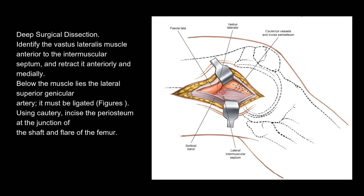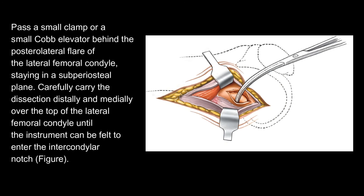Using cautery, incise the periosteum at the junction of the shaft and flare of the femur. Pass a small clamp or a small Cobb elevator behind the posterolateral flare of the lateral femoral condyle, staying in a subperiosteal plane, until the instrument can be felt to enter the intercondylar notch.